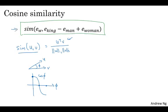If you want, you can also use squared distance or Euclidean distance, u minus v squared. Technically, this would be a measure of dissimilarity rather than a measure of similarity, so we need to take the negative of this. And this will work okay as well, although I see cosine similarity being used a bit more often. And the main difference between these is how it normalizes for the lengths of the vectors u and v.